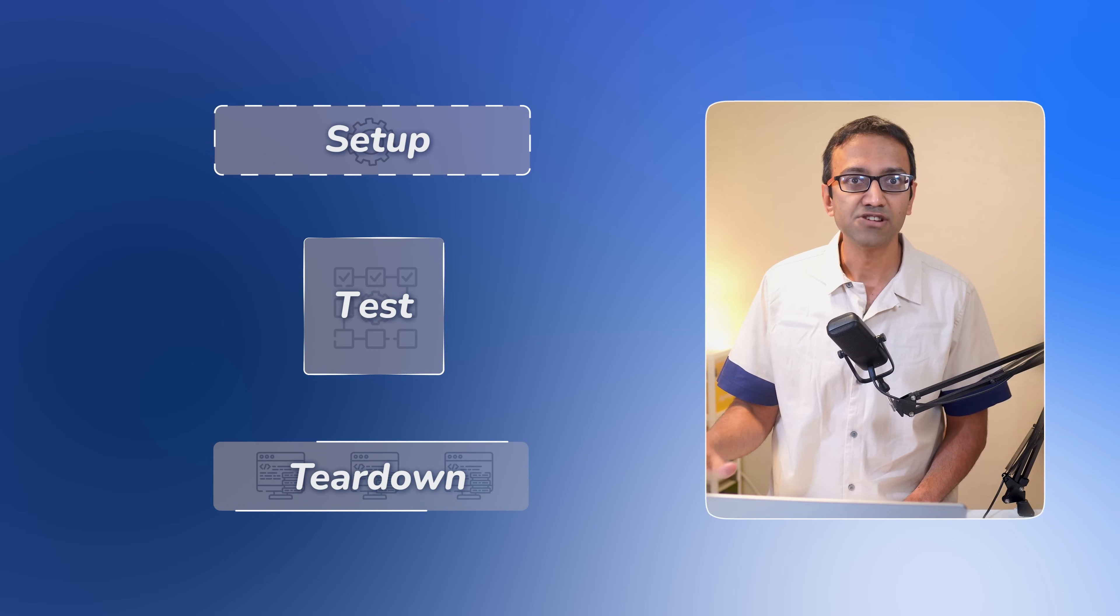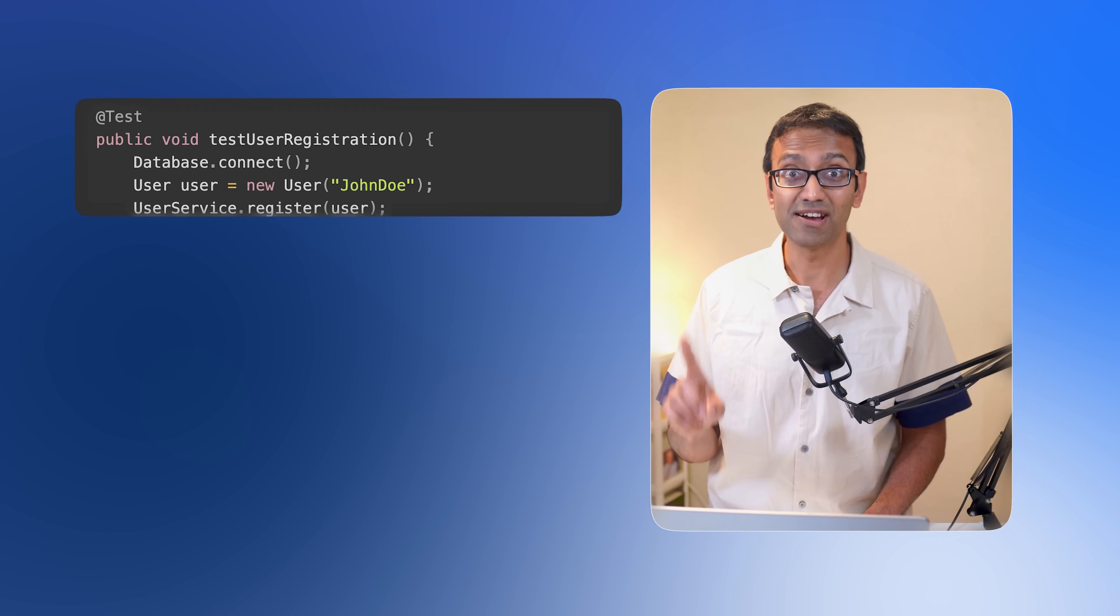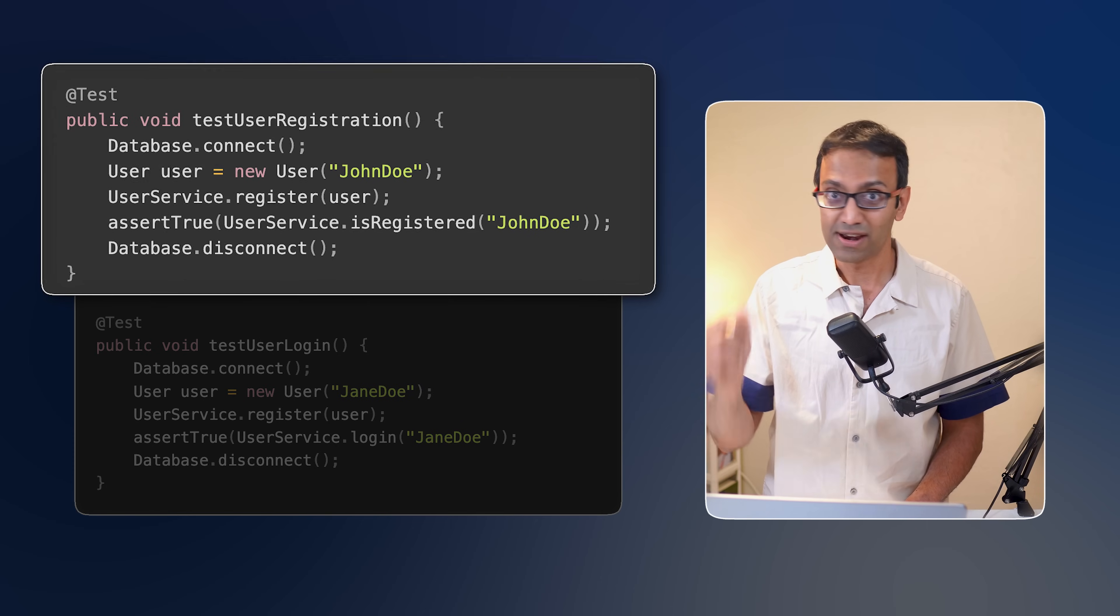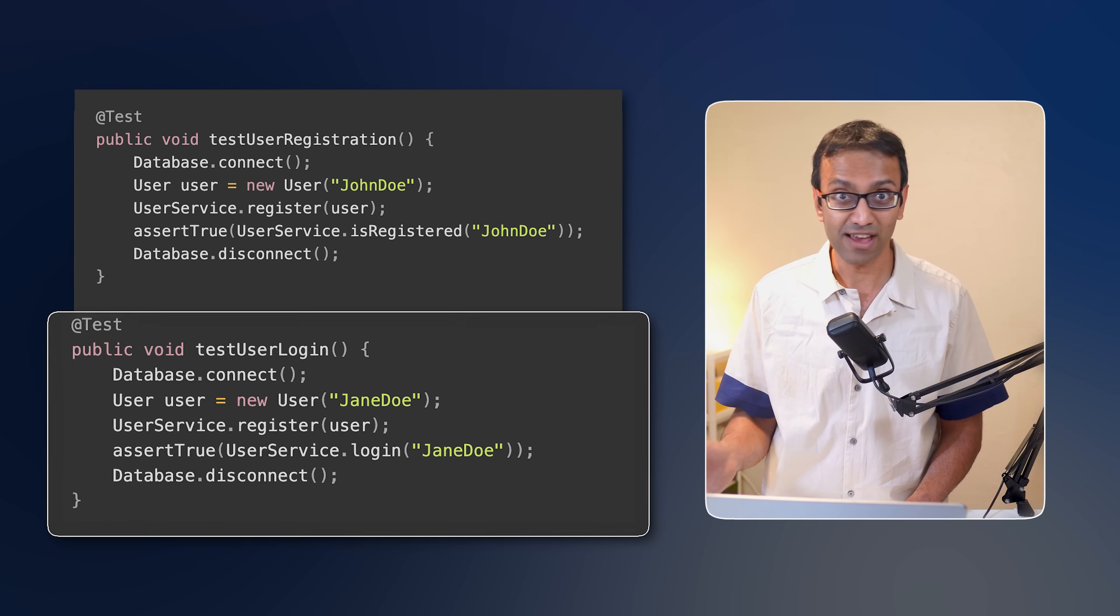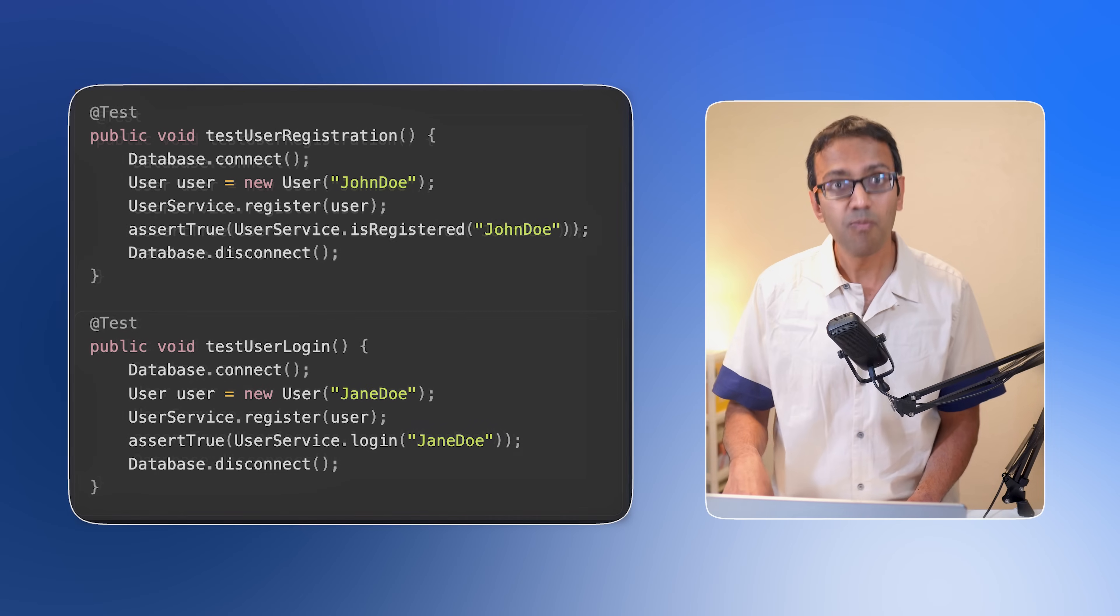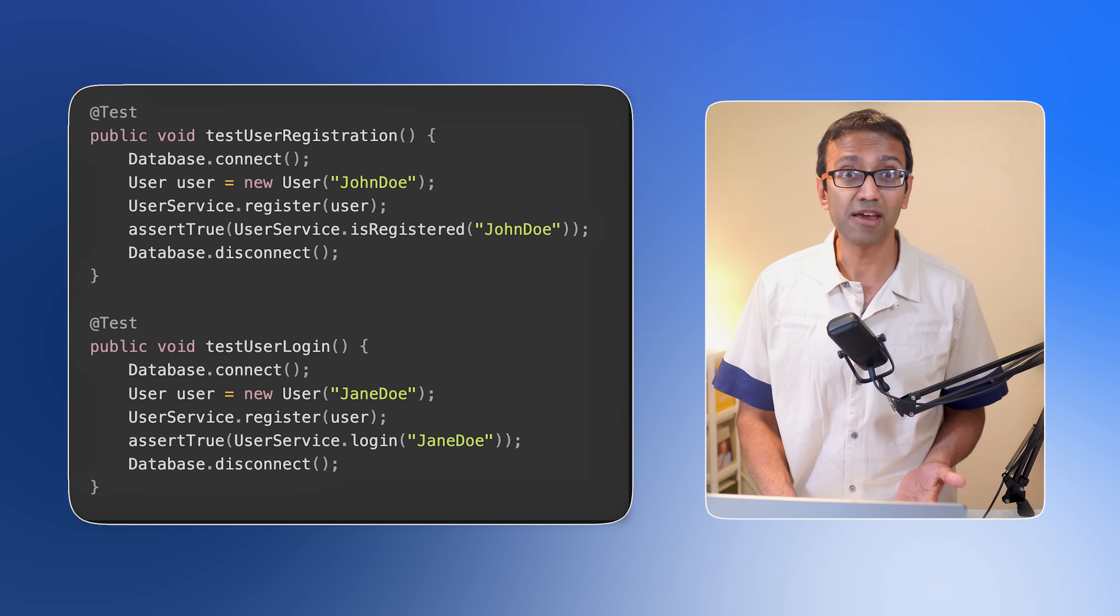A classic example for this is any setup and teardown logic. You need to run some code that sets the stage for the tests to run, like prep work. The code needs to run before anything you want to run in the test itself. Similarly, you need code that does cleanup work and that code needs to run after each and every test runs. Here's an example of what not to do. I have a user registration test. I'm doing a database connection and then running the test and I'm disconnecting from the database. I have another test for user login. What am I doing here? Database connection, running the test and then database disconnection. Notice how both tests connect to the database before the test code executes and disconnect from the database after the test code is done. This is repetitive and error prone.